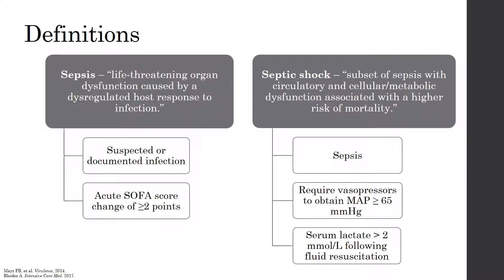Septic shock, on the other hand, is defined as a subset of sepsis with circulating and cellular or metabolic dysfunction associated with a higher risk of mortality. Patients with septic shock display the signs and symptoms of sepsis, as well as require vasopressors to maintain a mean arterial pressure greater than or equal to 65 and a serum lactate of greater than 2 following fluid resuscitation. These definitions were recently updated from their 2001 definitions and are called Sepsis-3. Previously, there were three categories: sepsis, severe sepsis, and septic shock. Healthcare providers are shying away from using severe sepsis now because there is no gradient of life-threatening organ dysfunction — as long as you have organ dysfunction, you have sepsis.